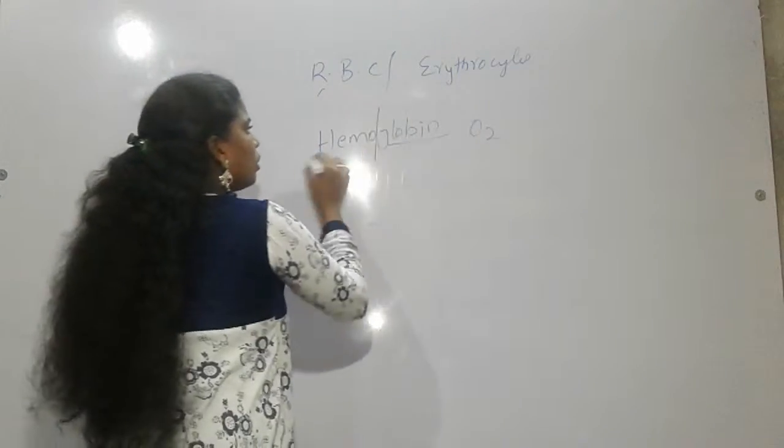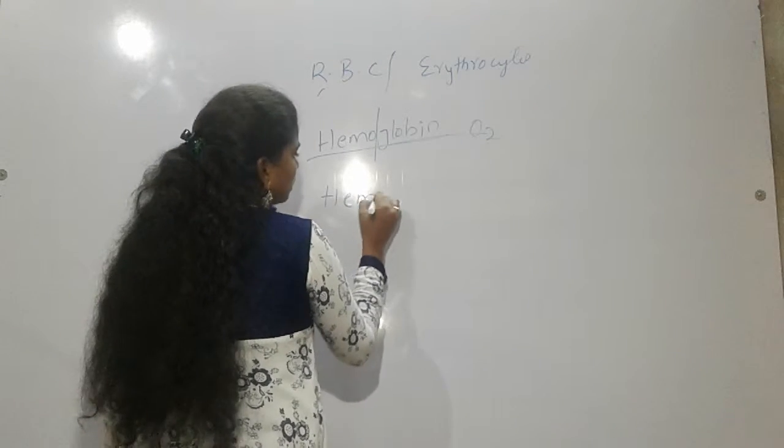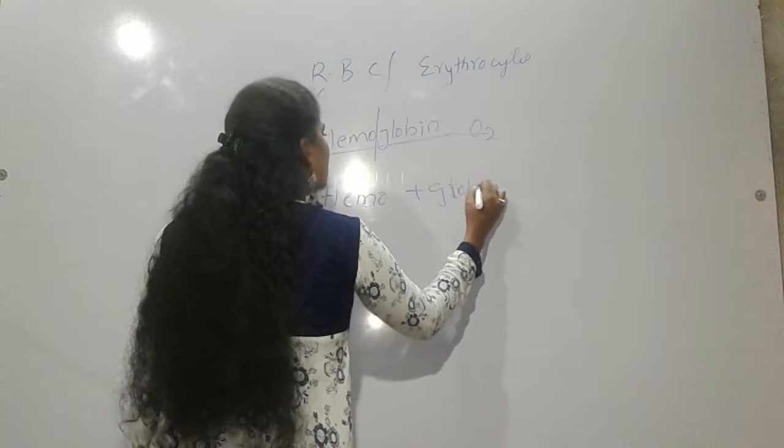How it forms? Hemoglobin, how it forms? It is a formation of heme plus globin. Hemoglobin.